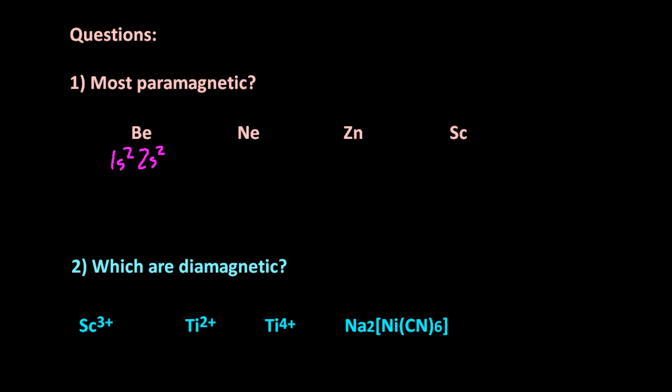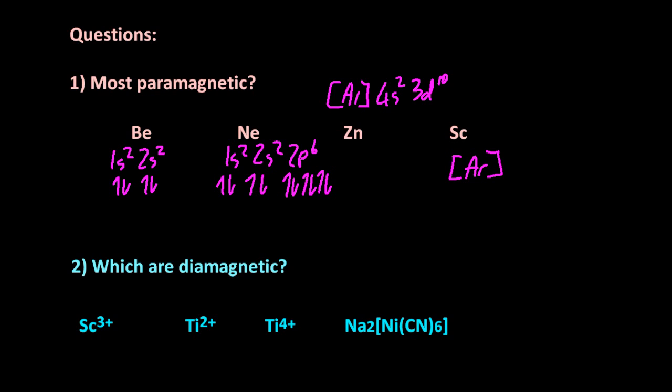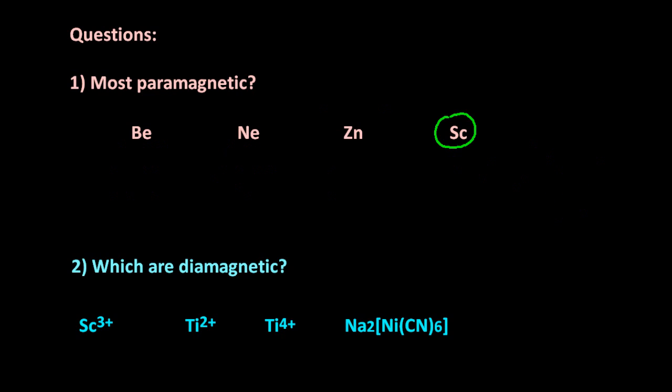And so some questions. Which is the most paramagnetic, which is diamagnetic? So paramagnetic needs at least one electron in an orbital on its own. So only scandium is paramagnetic.